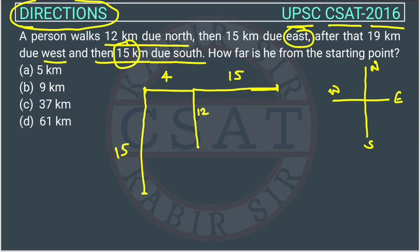How far is he from the starting point? The starting point was here. This dotted distance we have to find out. This distance will be 4, because 15 is this much and 4 is this much — total was 19. And this is 12, so this remaining is 3.